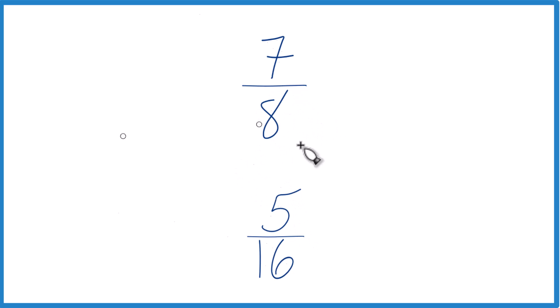We could also get a common denominator. Right now we have 8 and 16. But if we found a number that both 16 and 8 went into, we had the same denominator, we could just compare the numerator and we'd be done.